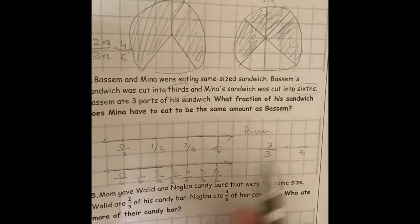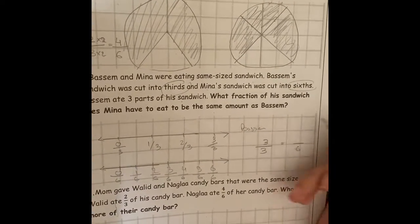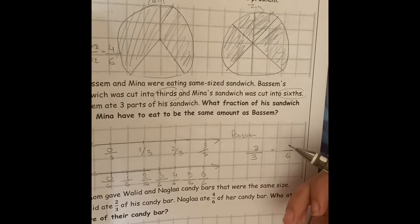Bassem ate 3 parts of his sandwich, so he ate 3 over 3 of his sandwich, so he ate the whole part, so he ate 1.